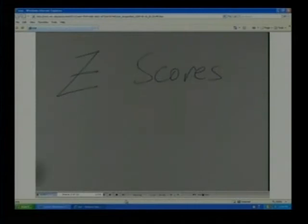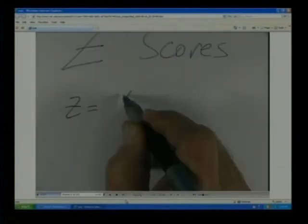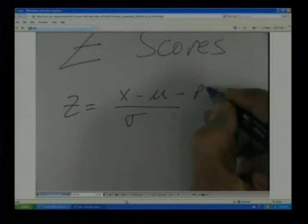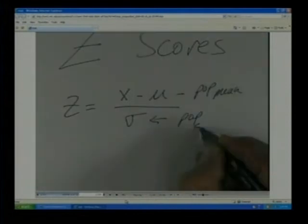So this is the basic form. The Z is going to be equal to X minus mu over sigma, and this is going to represent the population mean, and this is going to be the population standard deviation.